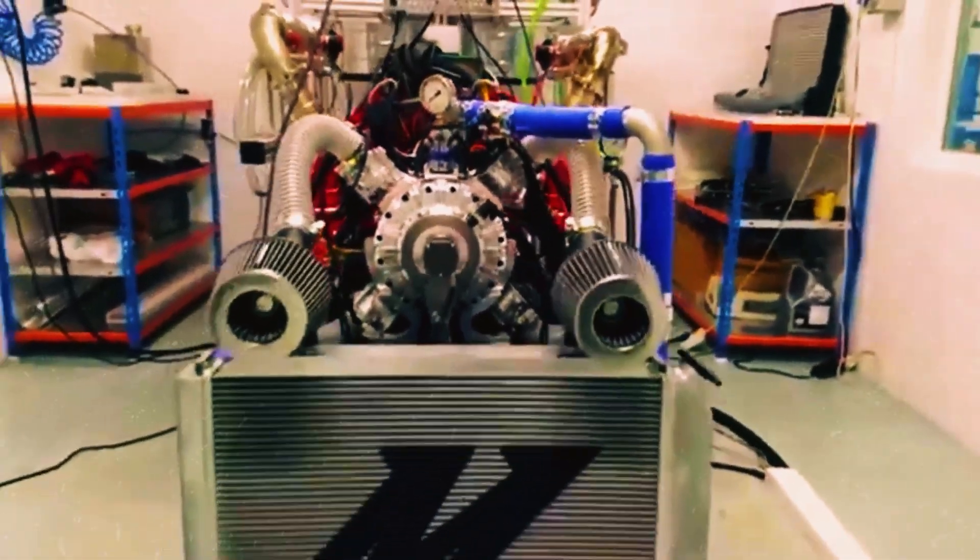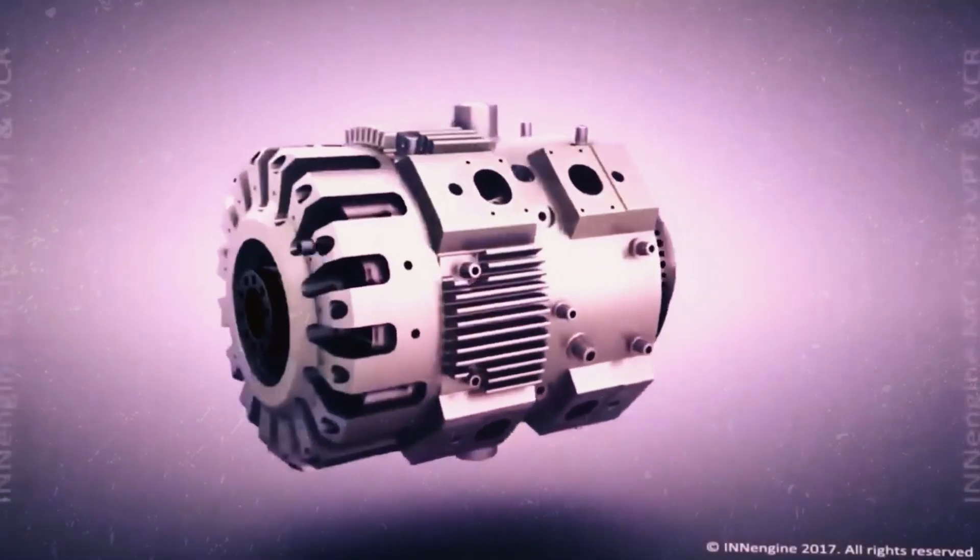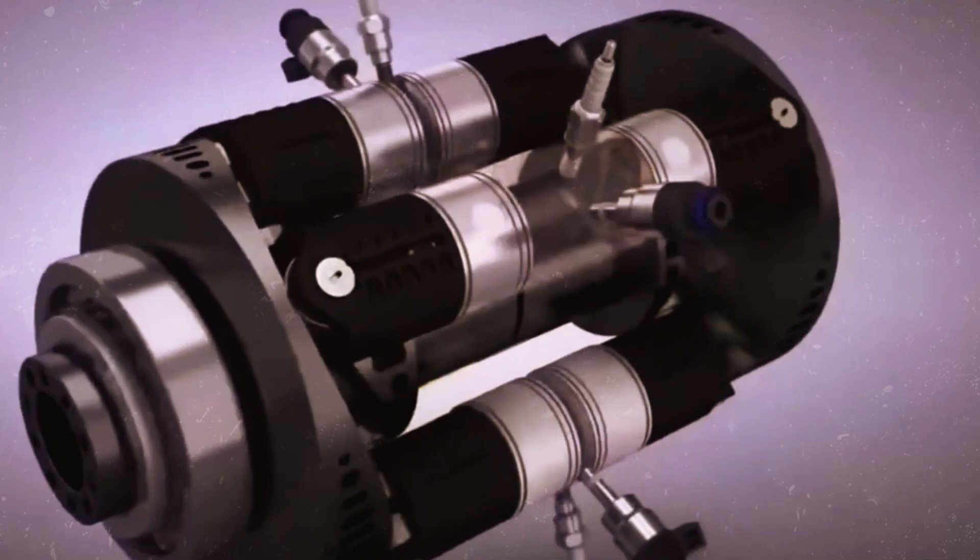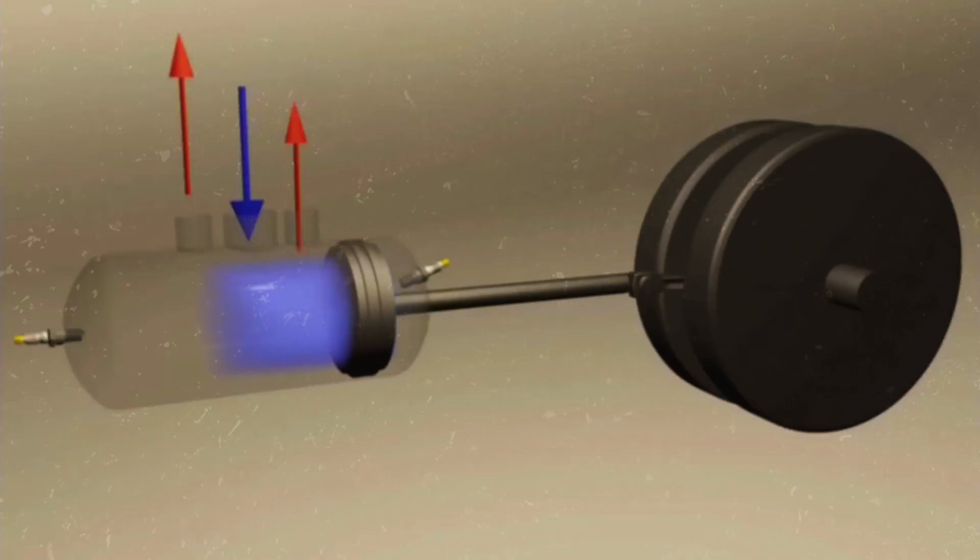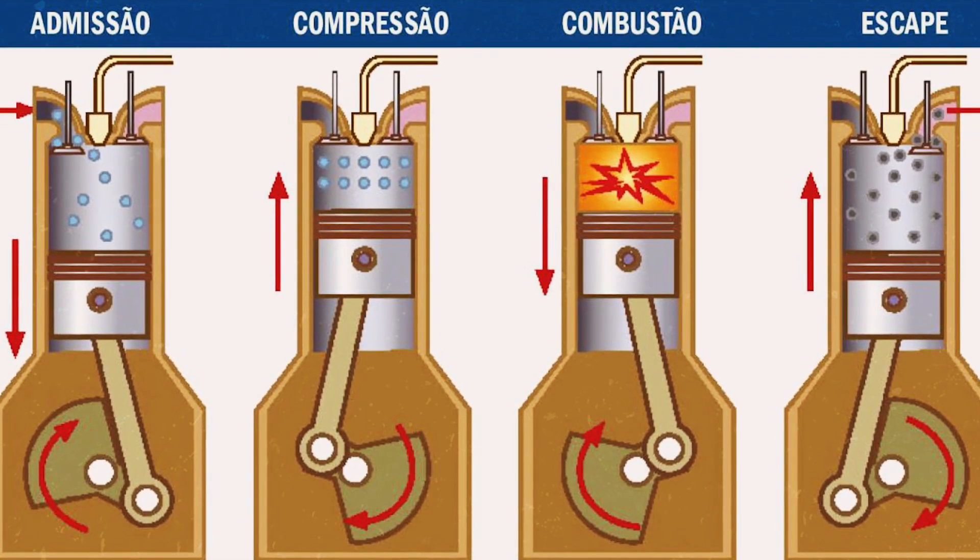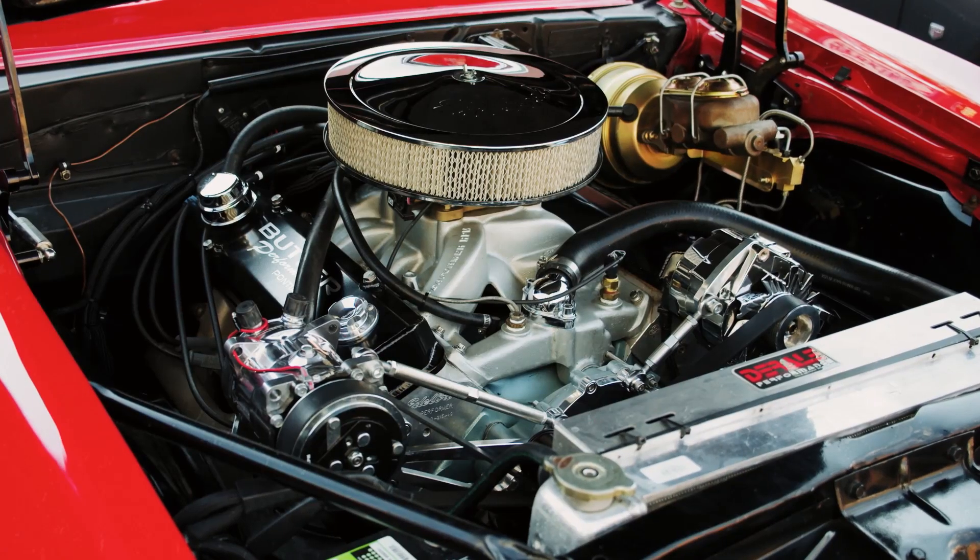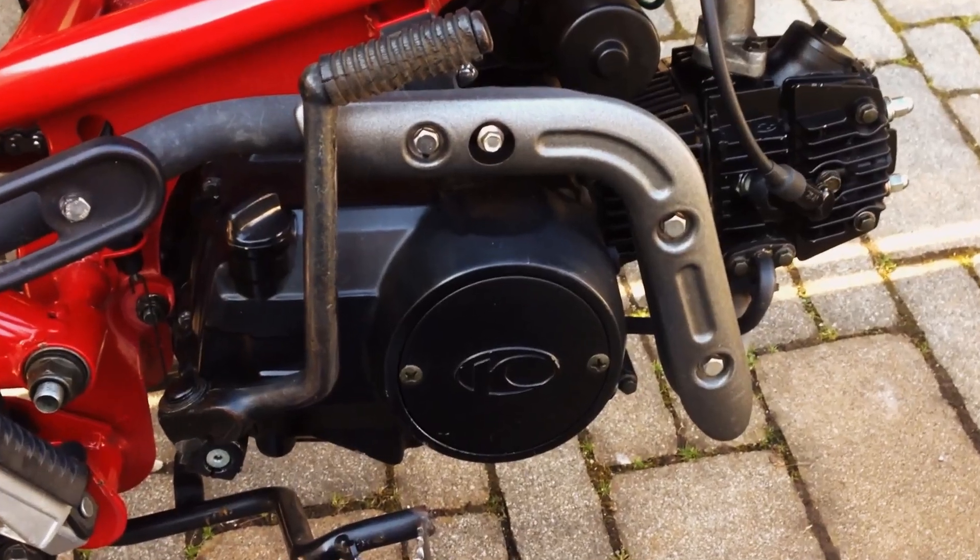In discussing the ION engine, it is crucial to clarify that it operates on a two-stroke mechanism, contrary to the one-stroke operation it might appear to employ. The functioning of the ION engine is in reality akin to that of a two-stroke engine, but its unique configuration facilitates a complete combustion cycle with every half turn of the crankshaft, or two combustion cycles per revolution. This is the rationale behind ION's designation of its engine as a one-stroke engine.